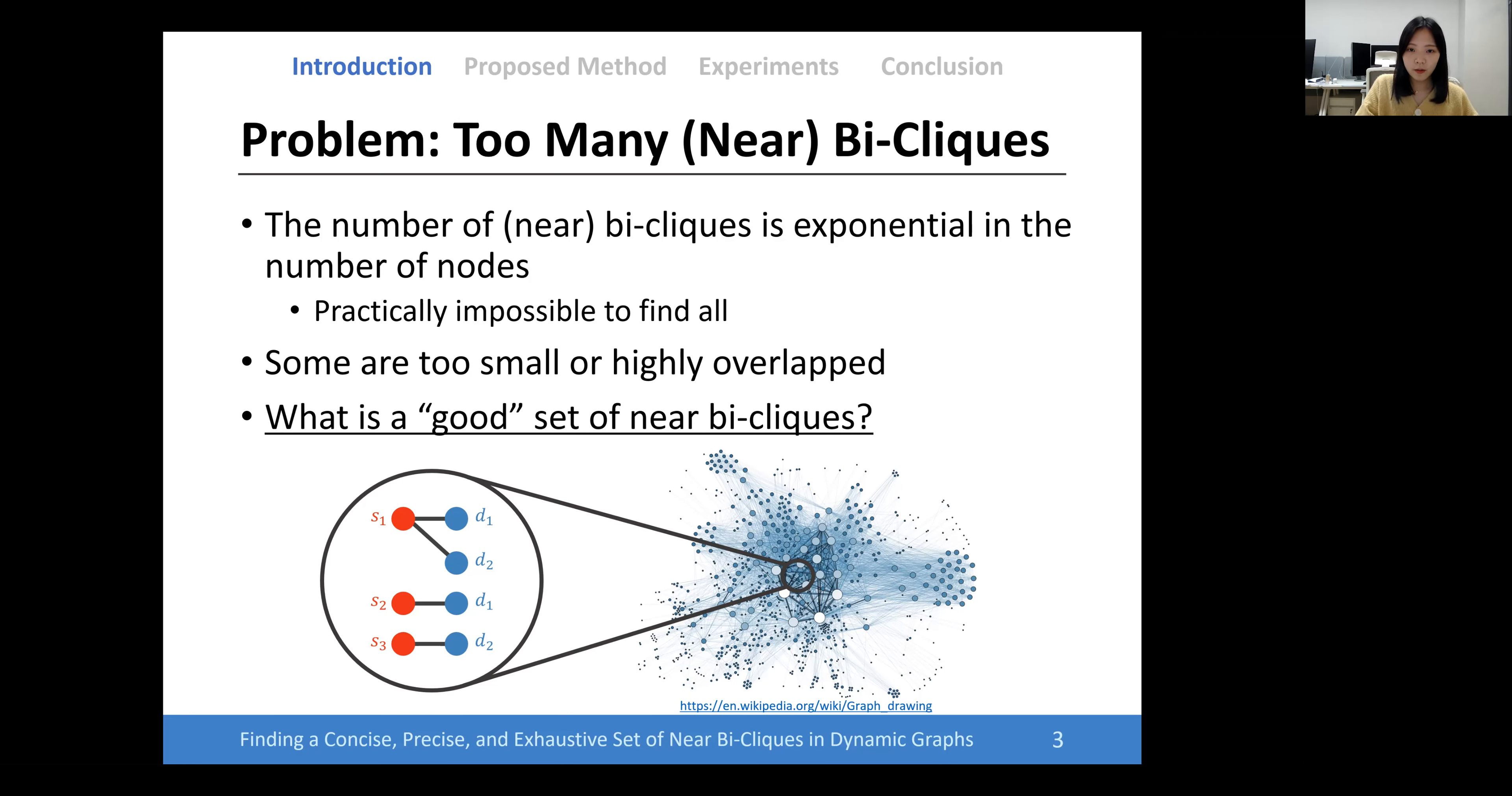Also, some near bi-cliques are too small or highly overlapped. Then, what is a good set of near bi-cliques in the graph?